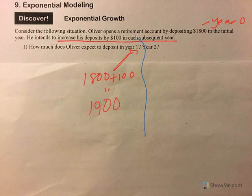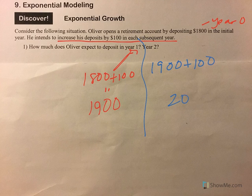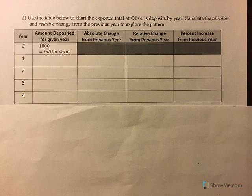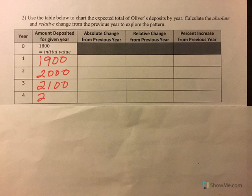And then in year two, he's at $1,900, so he's going to add one more $100. So in year two he would deposit $2,000, because every year he increases his deposits by $100. So in year one it's $1,900, in year two it's $2,000 — we just keep adding $100.